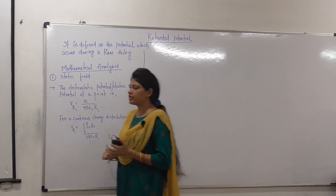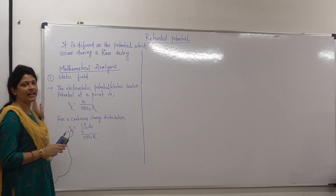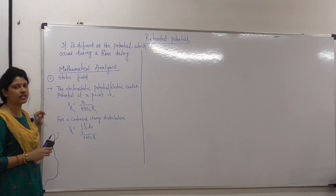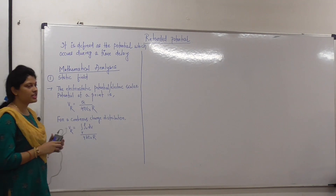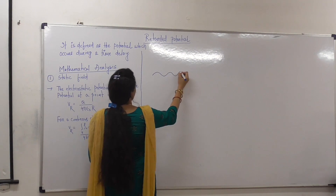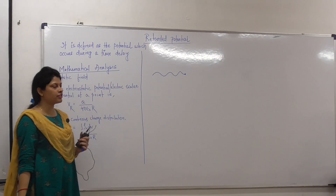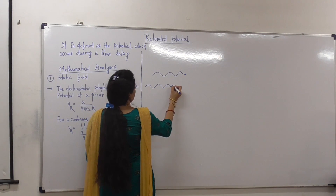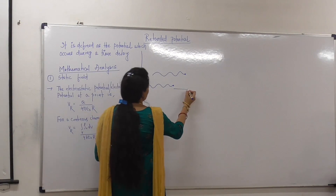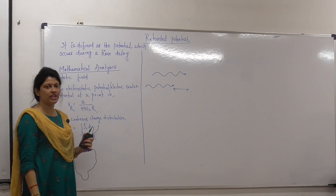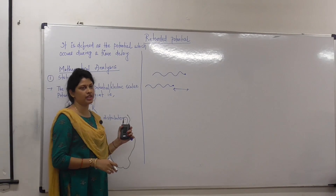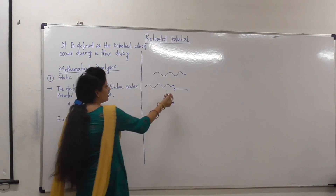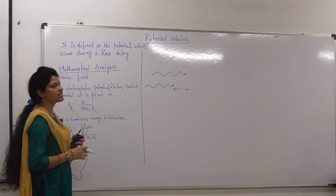First of all, let us consider potential. As you know, potential can exist at any time instant and any point. But coming to the Retarded Potential, it is that potential which generally occurs during a time delay. Suppose this is a wave and here there is a point at which you have to find out the potential. But suppose there is a time delay — that means now the position will be shifted. We are going to get a delay. So the potential that exists during a time delay is known as your Retarded Potential. Initially we were finding the potential at this point, but as per the time delay, now here we have to find out the potential. That concept is known as the Retarded Potential.